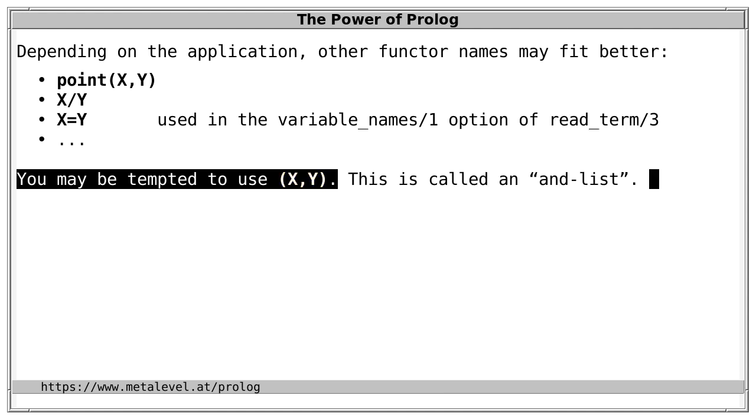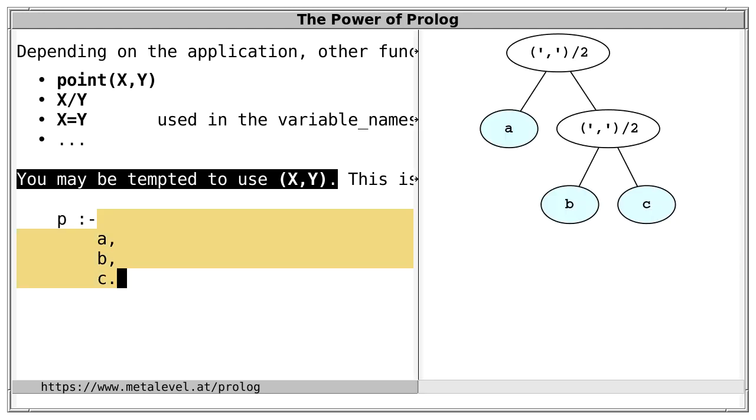This is sometimes called an and-list because that's how and, that is conjunction, is written in clause bodies. For instance, in this case, the body is a conjunction, that is a term with principal functor comma and arity 2.